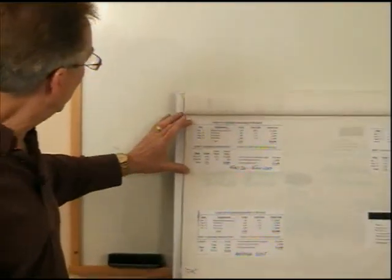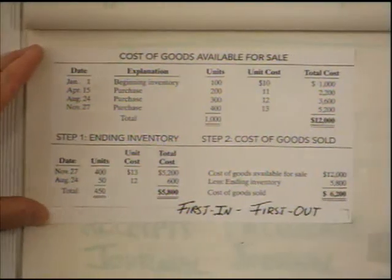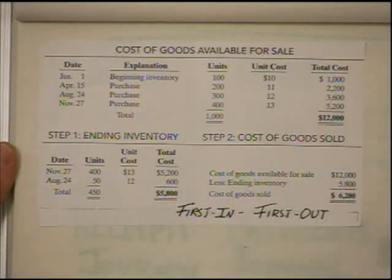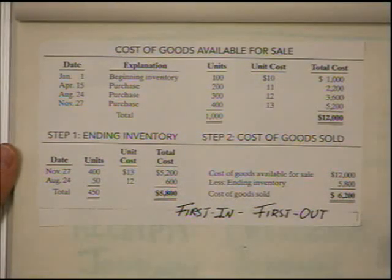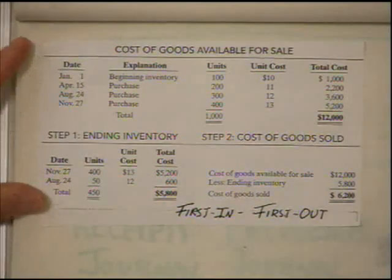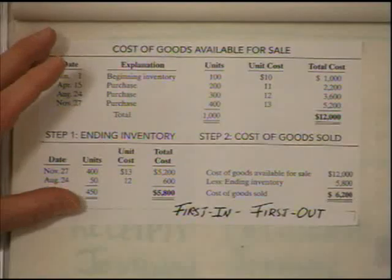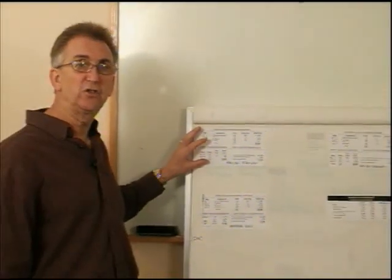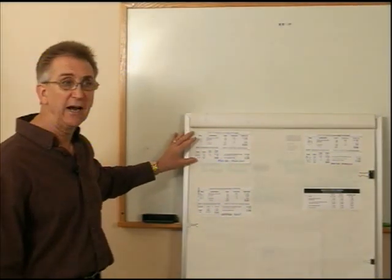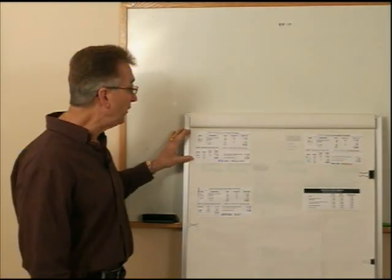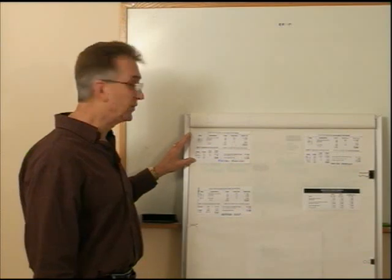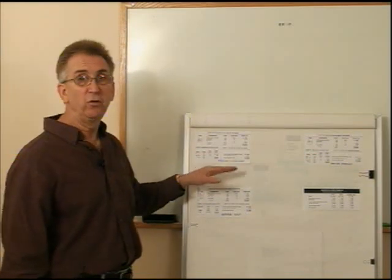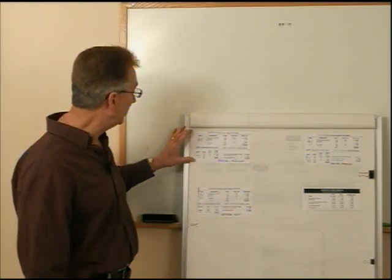One thing I want to remind you about all three of these methods is that these are called cost flow assumptions, and we're allowed to use any of the three. But once we start using one, we cannot simply change from one method — first in, first out — to the next method we're going to learn, which is last in, first out, at a whim. We have to be able to show it more clearly shows the operations of the company. So generally, if you start with first in, first out, you're going to stay with first in, first out. After we analyze last in, first out, we'll take a look at tax ramifications and why one company may want to use one versus the other.